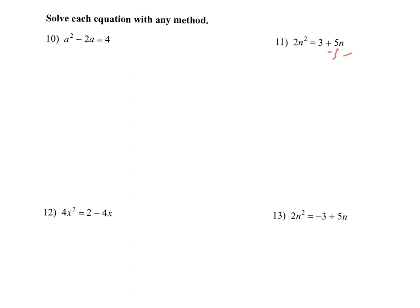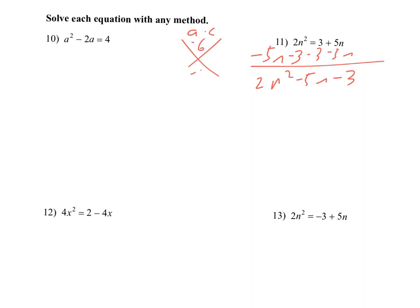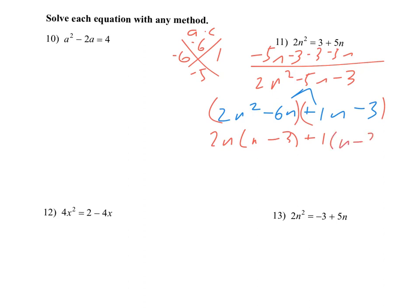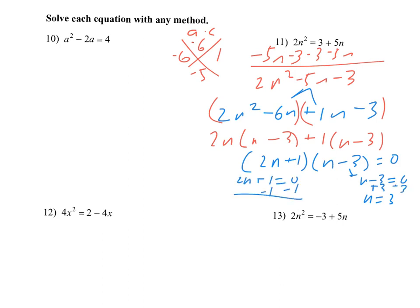Alright, next up, number 11. I would get one side to 0 — subtract 5n and subtract 3. So I get 2n squared minus 5n minus 3. Now thinking of two numbers that multiply to negative 6 and add to negative 5 — that would be negative 6 and positive 1. This factoring does work, but I do need to use grouping since I have my 2n squared. The first group I can take out a 2n, which leaves me with n minus 3. The second group I can only take out a plus 1, which leaves n minus 3 as well. So my parentheses are 2n plus 1 times n minus 3 equals 0. Setting each equal to 0: n equals 3, and for 2n plus 1 equals 0, I subtract 1, giving 2n equals negative 1, so n equals negative 1 half.